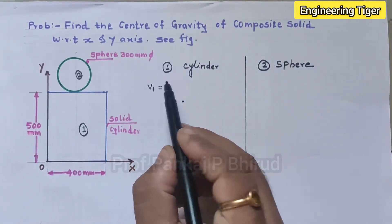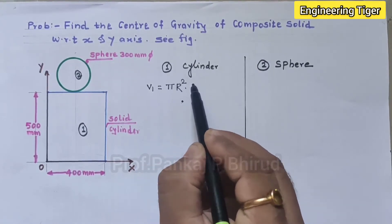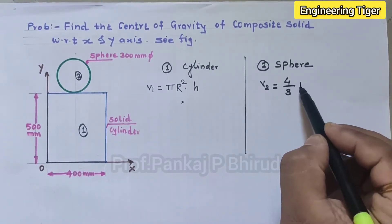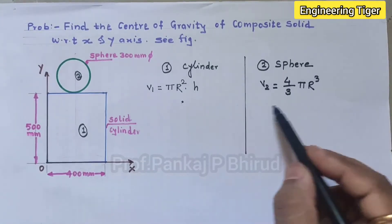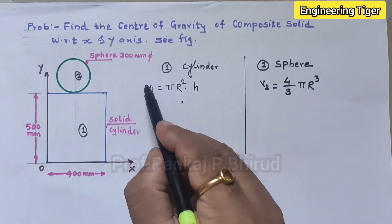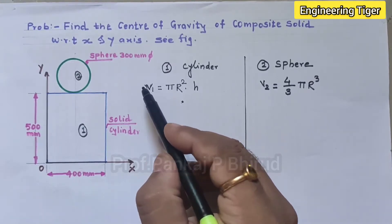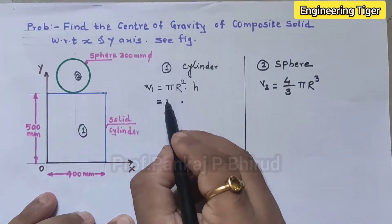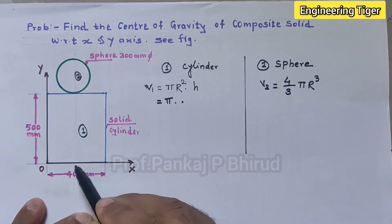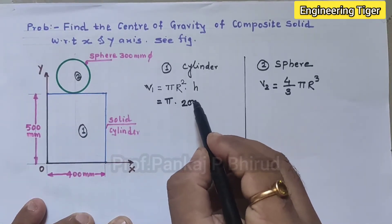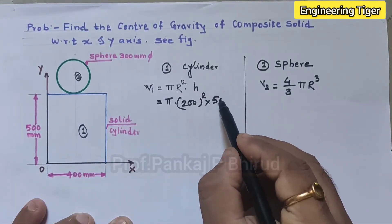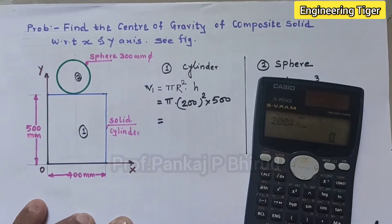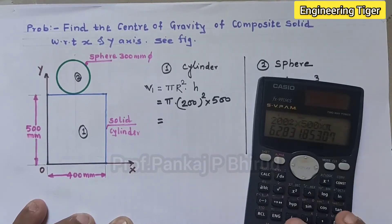So volume of cylinder, that means pi r squared h. For this formulas go through our previous video so that the formulas will be easily understood. Now put the values of r and h. So the diameter is 400 so radius is 200 for the cylinder. So 200 squared into height is 500. We will get 62.83 into 10 raised to 6 mm cubed.